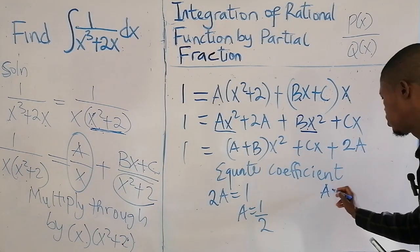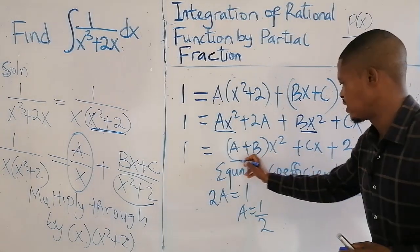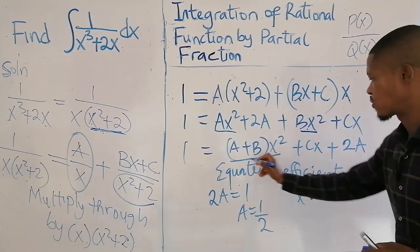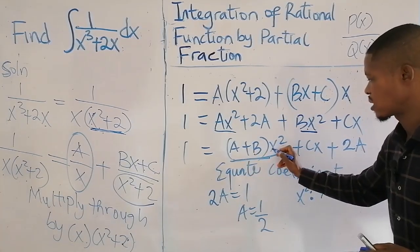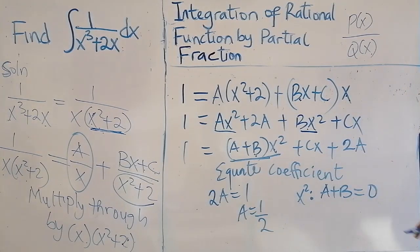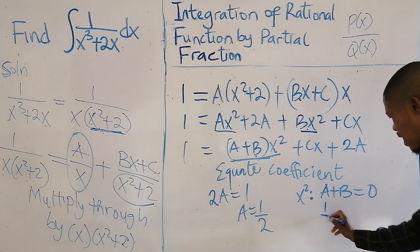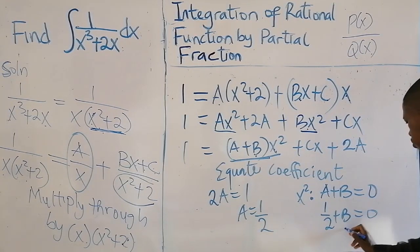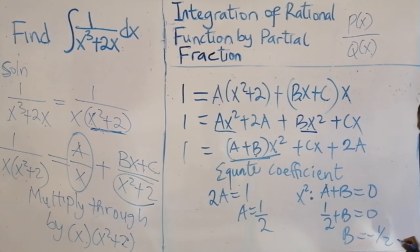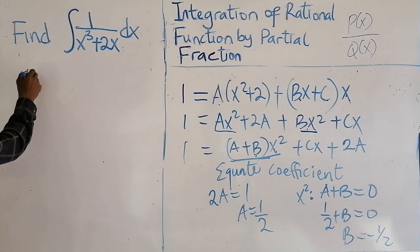If we equate the constant terms, we have A plus B equal to zero. Equate the coefficient of X squared. We have A plus B equal to zero. So we have A as half plus B equal to zero. So B is minus half.